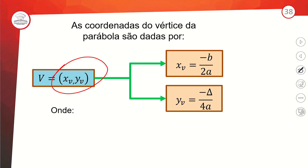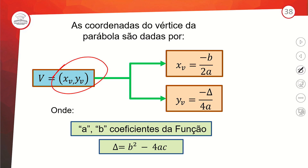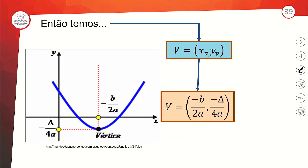O a e o b são os coeficientes da própria função, e o delta é B² menos 4AC — os mesmos da equação. Temos ali a representação do gráfico mostrando o vértice. Não vamos fazer exemplos do vértice agora porque temos muita coisa para recordar — os exemplos serão nas atividades de sala. Calma, galera, sem desespero. É muita informação, mas a função quadrática é recheada de detalhes.